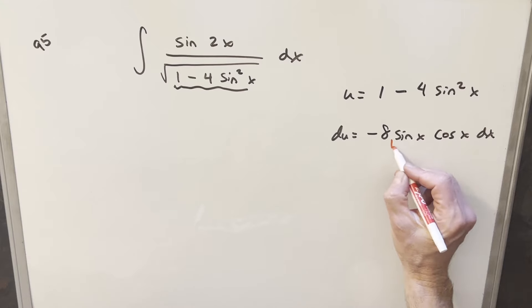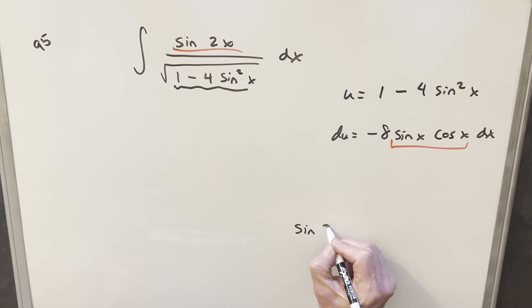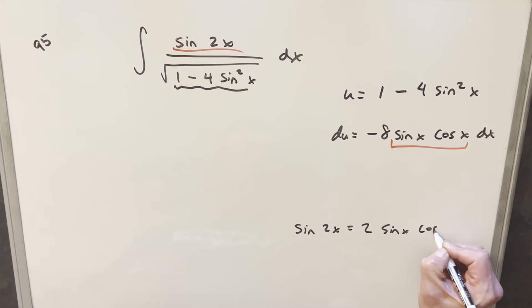The nice thing about this right here, it looks like the double angle formula for sine. So sine of 2x we can write as 2 sine x cos x. We can basically create that just by splitting up this 8. So let me rewrite it in this form.